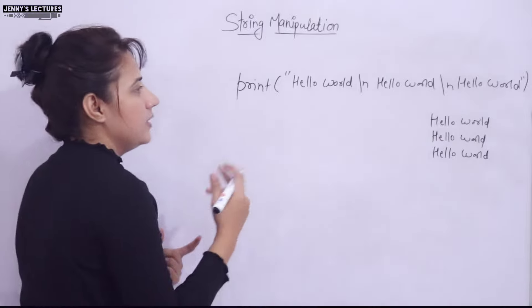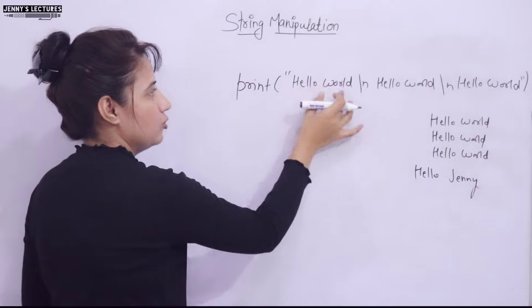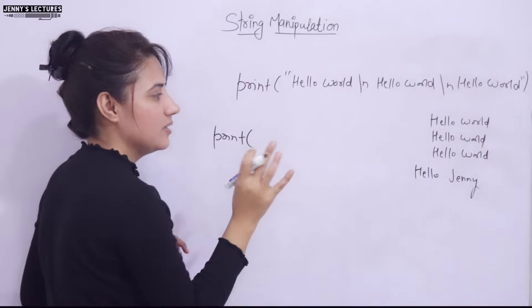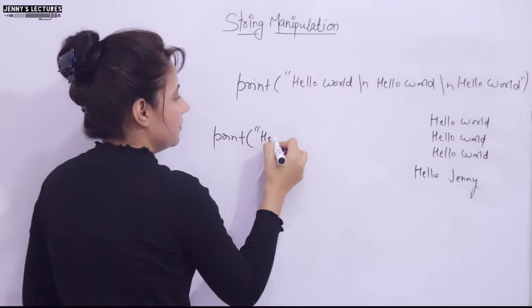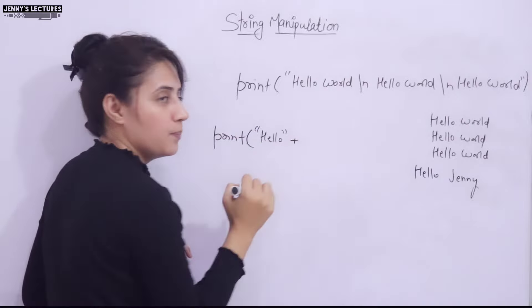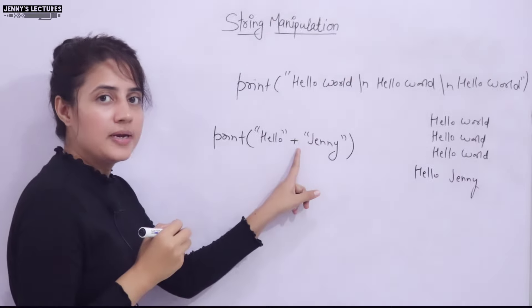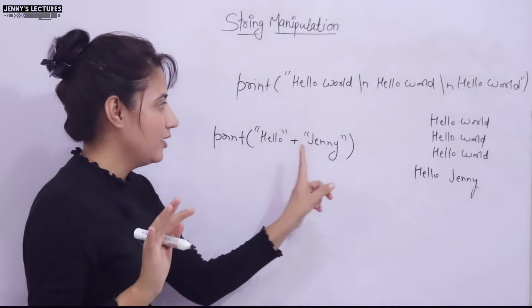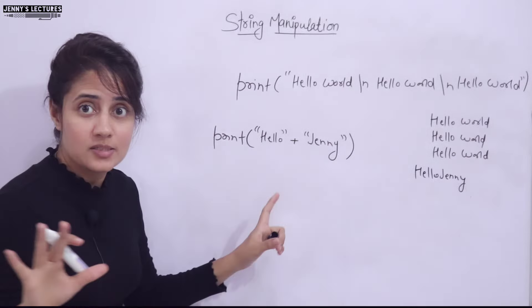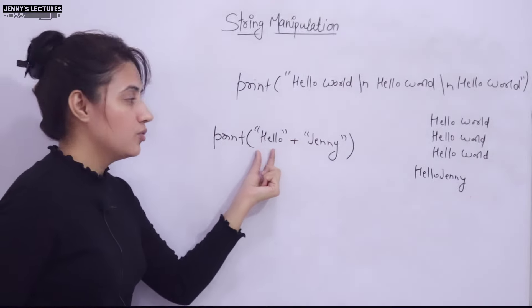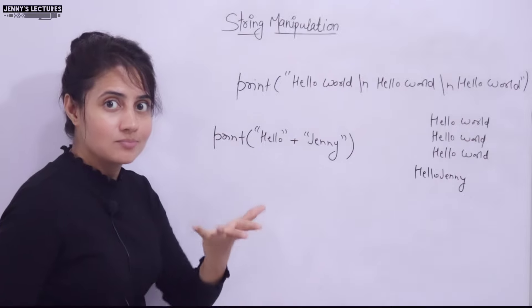Now, if I want to concatenate two strings — like printing 'hello' followed by my name 'jenny' — rather than writing 'hello jenny' directly, I can concatenate two strings using the plus symbol. So: print("hello" + "jenny"). This will print 'hellojenny' with no space — the plus only concatenates the two strings, no space in between.